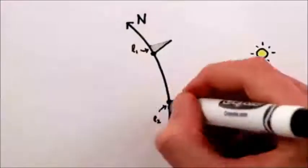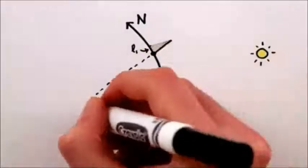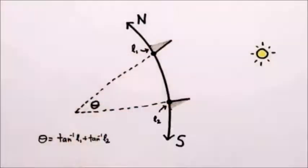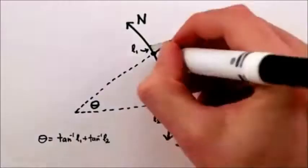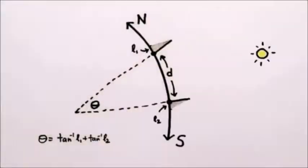You can use the shadow lengths to figure out the angle between the sticks, and once you add in how far apart they are, you can calculate the Earth's curvature.